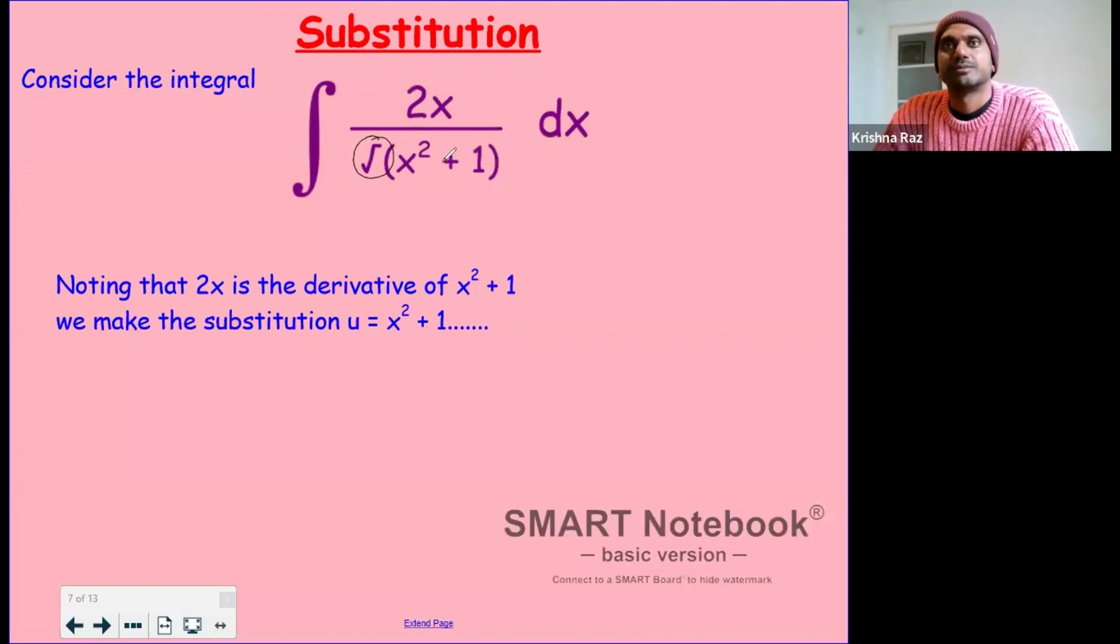We would make the substitution of u equals x squared plus 1. Notice that 2x is the derivative of x squared plus 1. We make the substitution u equals x squared plus 1.